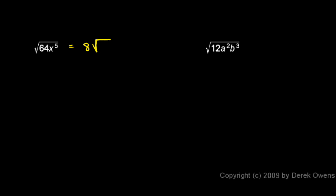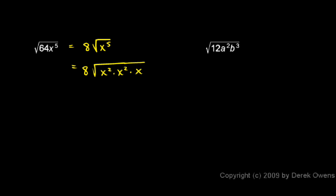I still have my x to the fifth inside the radical. We'll keep the 8 out there. x to the fifth is equal to x squared times x squared times x. What you see here is an x squared multiplied by itself — so that's x squared squared. The square root of that is going to be x squared, because that's x squared times itself. So that pops out from underneath the radical and just becomes an x squared. So I have 8x squared times the square root of x.